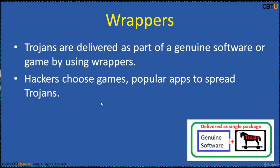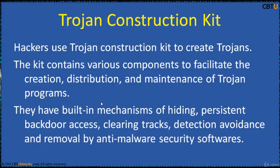Wrappers attach a Trojan with a genuine executable and make them a single executable. When the genuine software is installed, the user does not notice that a Trojan is also being installed in the backend. Hackers generally choose games and popular apps to spread Trojans. Trojans are created using construction kits. The kit contains various components to facilitate the creation, distribution, and maintenance of Trojan programs. They have built-in mechanisms for hiding, persistent backdoor access, clearing tracks, detection avoidance, and removal by anti-malware security tools.